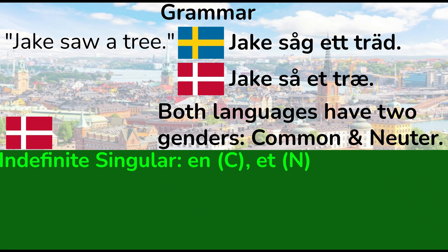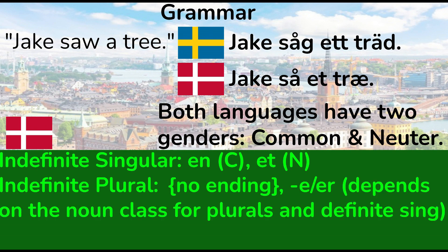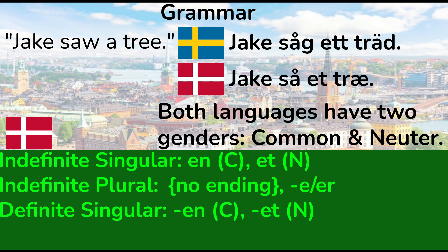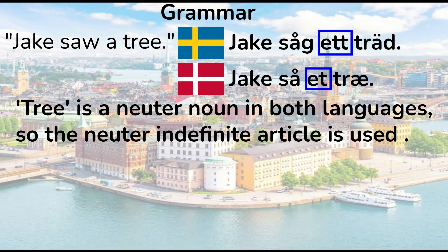In Danish, it's similar. For the indefinite, there's 'n' and 'et'. For the plural, there's either 'e', 'er', or no ending, depending on the noun class word plural's indefinite singular. There are also the definite singulars: 'n' for common and 'et' for neuter. The definite plural can either be 'ina' or 'anna'. The word for tree in both languages is a neuter noun, so the neuter indefinite article is used.